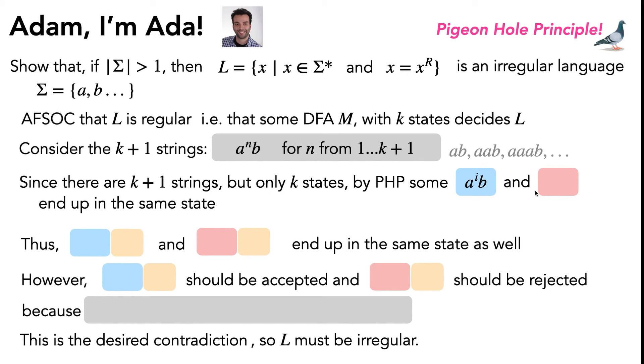So we have some a^i b and some a^j b that end up in the same state. To make it really explicit though, this is for i not equal to j, so it's two distinct strings even though we don't know which ones they are.